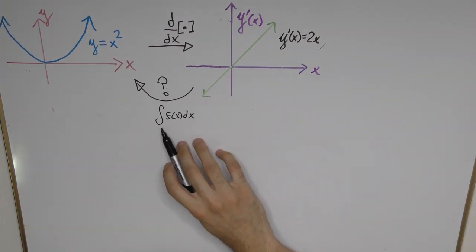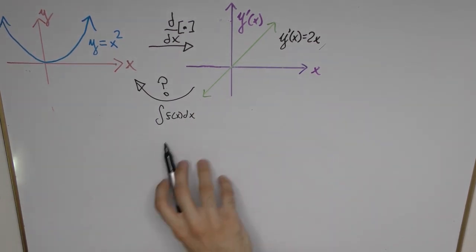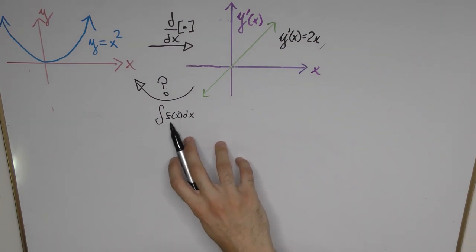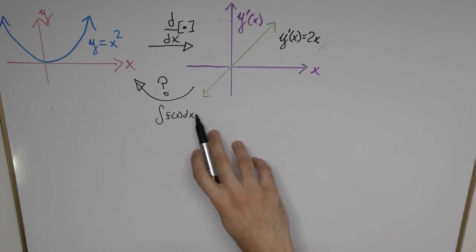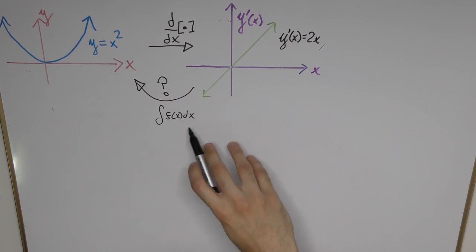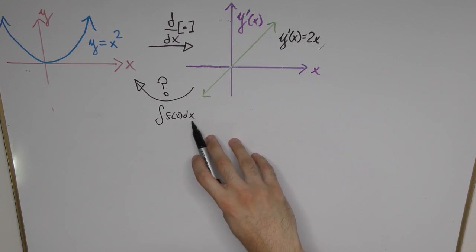We have an s that has this elongated tails, we have the function that we would like to obtain the integral of, and then we have the dx factor which is essentially just the infinitesimal increment in the x variable.